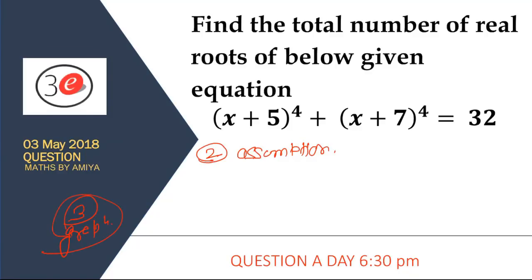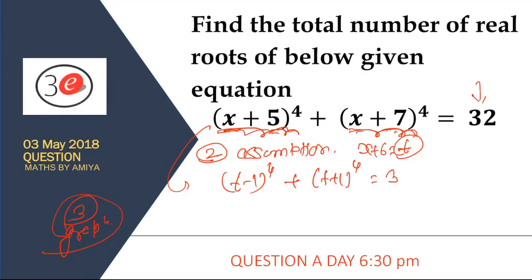Whenever we have some functions and a value, we assume the average. The average of x+5 and x+7 is x+6. We assume x+6 equals t. Now the first expression becomes (t-1)^4 plus (t+1)^4 equals 32.